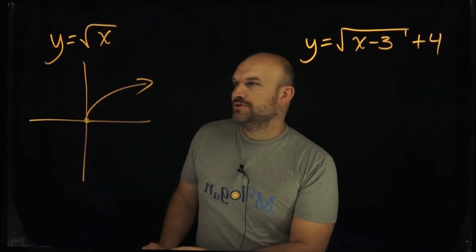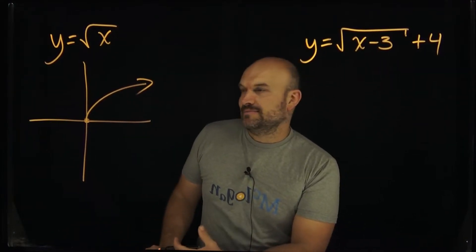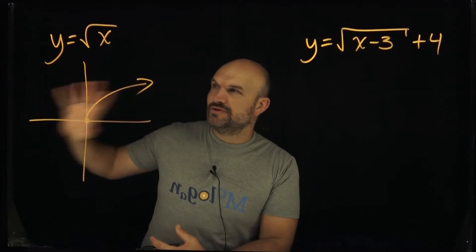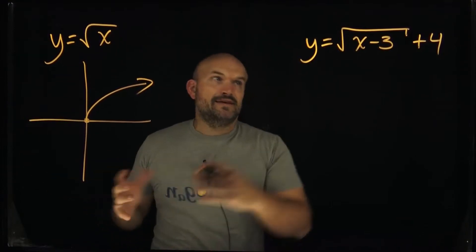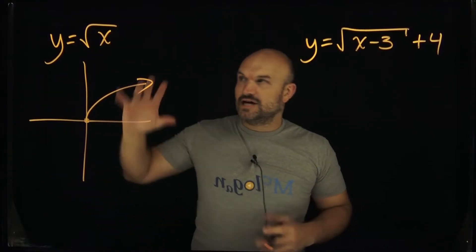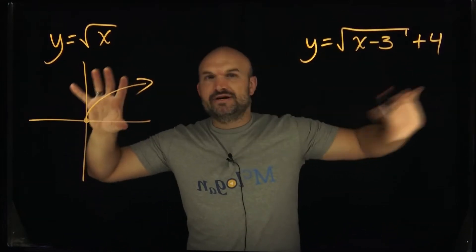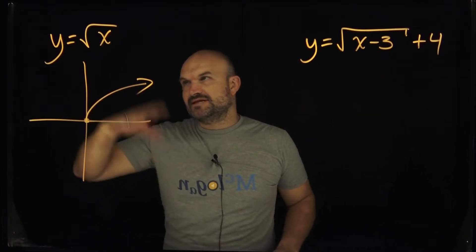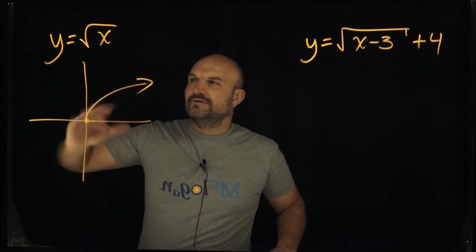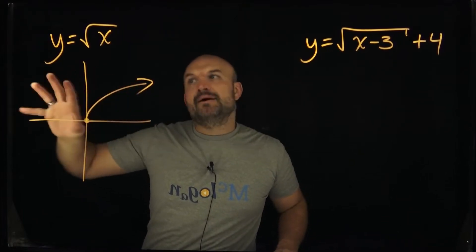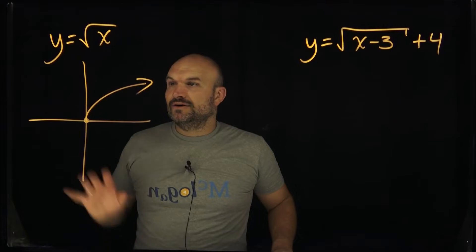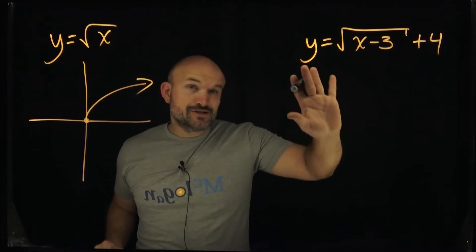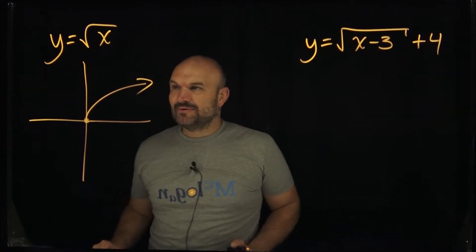One thing I tell my students, especially once we're getting into algebra 2 and definitely precalculus and calculus, is you have to know your parent functions. It's just so critically important so that you can do a lot of the math rather easily. If you have a foundational understanding of what this graph looks like, then applying the transformation and identifying the domain and range is going to be simple. The main important thing is our parent function — we recognize that it's always positive, always in the first quadrant. Transformations can change that, so let's identify the domain and range.